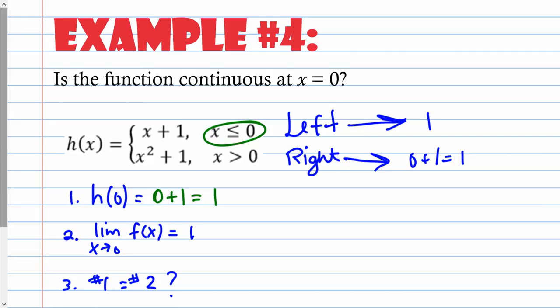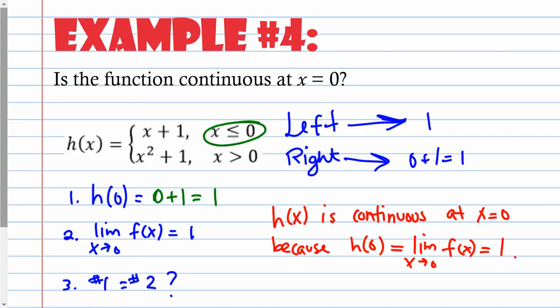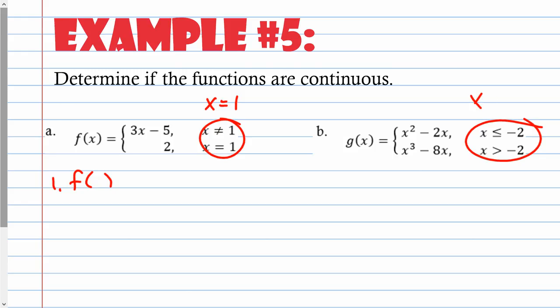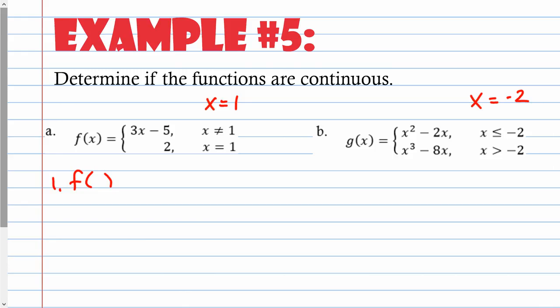You would write: h(0) equals the limit of f(x) as x approaches 0. Example 5: The breakpoints occur at x = 1 and x = −2, so those are the x-values to check. For part a, we check x = 1; for part b, x = −2. You figure out which piece to plug into by looking at the interval conditions.